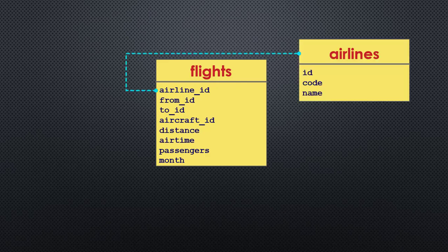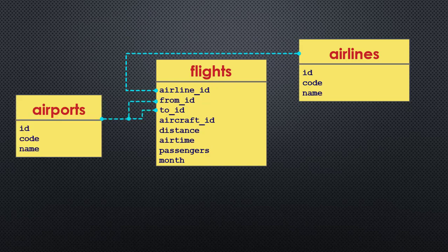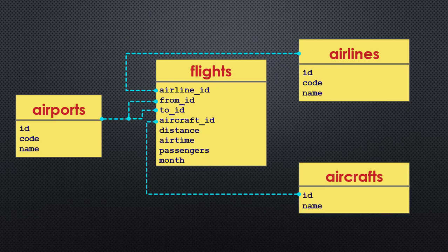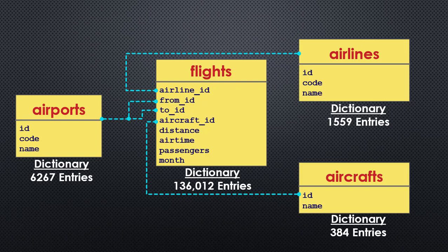Let me explain how different parts of the database are connected with each other. This is our flight database which I explained. This airline ID refers to another database of airlines. One airline data value has the ID, code, and the name of the airline. Then these two — from ID and to ID — refer to the database of airports. One airport data value has ID, code, and the name of the airport. Finally, the aircraft ID refers to the database of aircrafts, and that contains ID and the name of the aircraft. The other information of the flight data is not connected to any further database. So we have four databases, and these are basically four CSV files. I will provide the starting code to load these CSV files using the DictReader method of the CSV module, so each data value will be converted to a dictionary. All these attributes will be the keys of the dictionary. One complete database will be the list of those dictionaries for each of these four parts — the flight is a list of dictionaries where one dictionary represents one flight's information, and so on for the other databases.